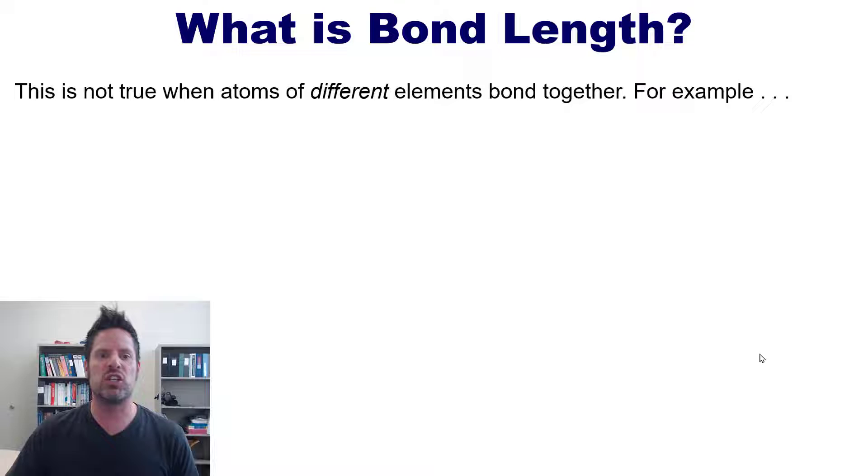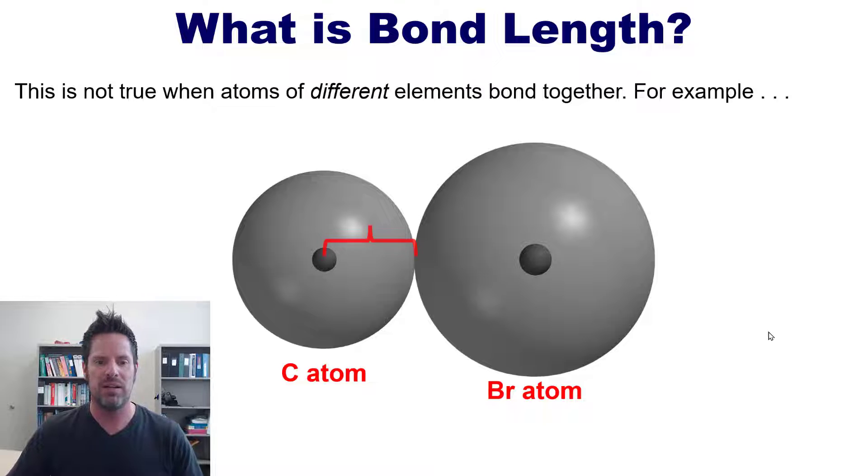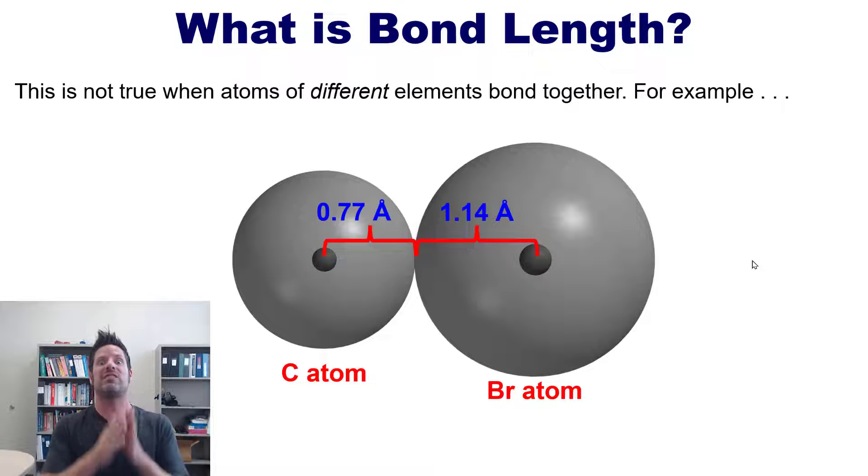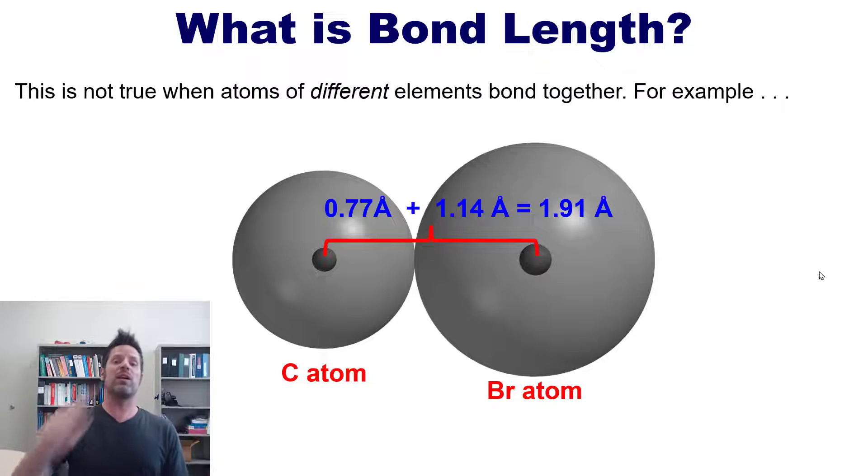This simple formula obviously does not work when the two atoms are of different elements that are bonded together. For example, if I've got a carbon atom bonded to a bromine atom, the carbon atom has its atomic radius and the bromine has its atomic radius. What would the overall length of the entire bond be? It would be the total distance between those two nuclei, which I arrive upon mathematically by just adding up those two numbers.